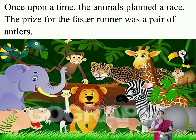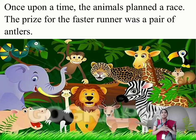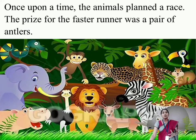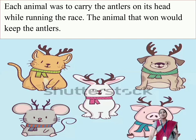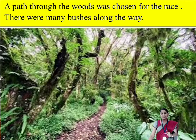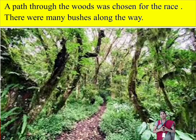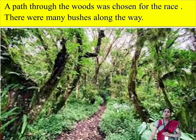Once upon a time, the animals planned a race and the prize for the fastest runner was a pair of antlers. Each animal was to carry the antlers on its head while running the race, and the animal that won would keep the antlers. A path through the woods was chosen for the race, and there were many bushes along the way. All these rules they had decided.